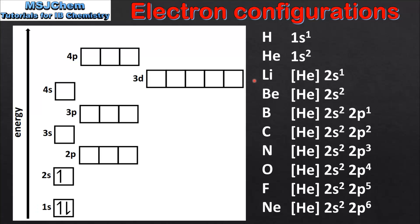Moving on to lithium, we now use the condensed electron configuration. So for lithium it's He2s1 and we put one electron in the 2s sub level. Next is beryllium which is He2s2, and we put a second electron in the 2s sub level.